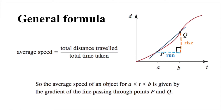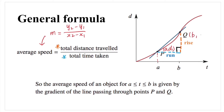If we want to find the average speed between points A and B, knowing their coordinates and using y2 minus y1 over x2 minus x1, we can find the gradient — that number is the average speed between A and B. The general formula is: average speed equals total distance traveled over total time taken, which is the difference in d-values over the difference in t-values. On the graph, point P has coordinates (a, d1) and point Q has coordinates (b, d2), so average speed is d2 minus d1 over b minus a.